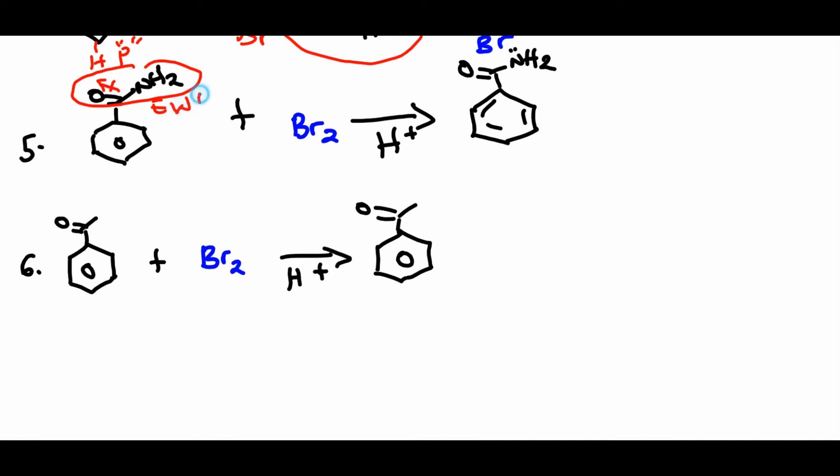So it's deactivating. The deactivating groups direct the incoming electrophile meta. Again from this cocktail the electrophile is Br+. The meta position is either that carbon or that carbon. We are not told it's excess, so we only substitute once. So the bromide ends up there, meta position. This is meta electrophilic aromatic substitution.